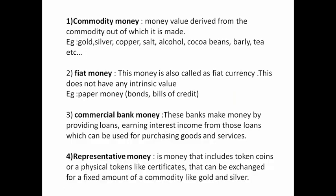Commodity money: a commodity is nothing but a product or an item — it is a raw material. In commodity money, the money value is derived from the commodity out of which it is made. Based on the type of commodity or product, the money value is decided. Examples include gold, silver, copper, and salt. For different commodities, we give different money values.